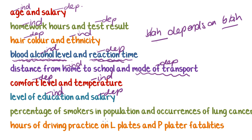Percentage of smokers in a population and the occurrences of lung cancer. 'Percentage of smokers depends on occurrences of lung cancer' — if you have more occurrences of lung cancer, does that mean more people smoke? Not necessarily. But 'occurrences of lung cancer depends on the percentage of smokers in a population' — that makes sense. So occurrences of lung cancer is the dependent variable and percentage of smokers is the independent variable.